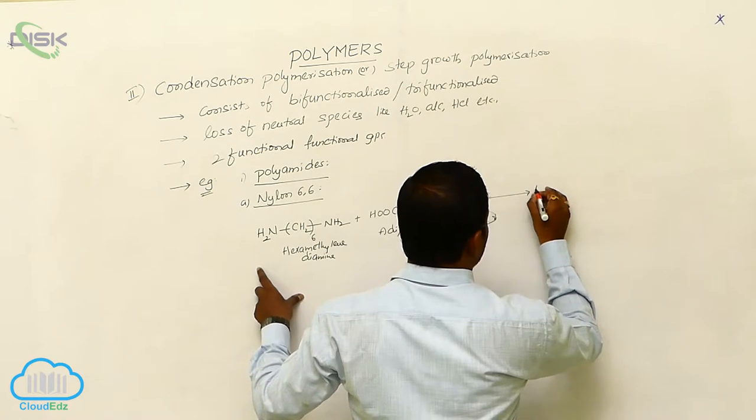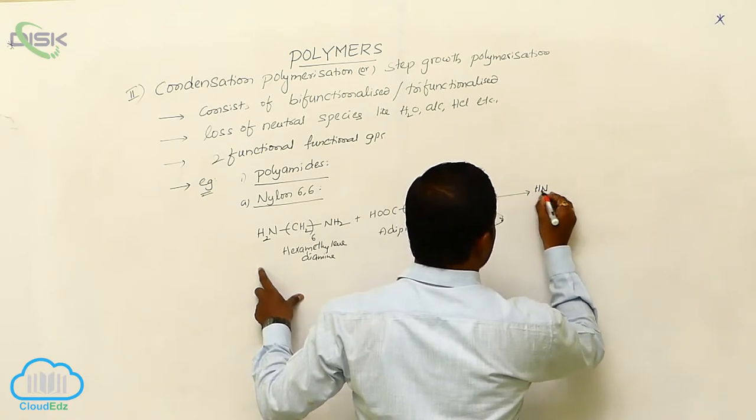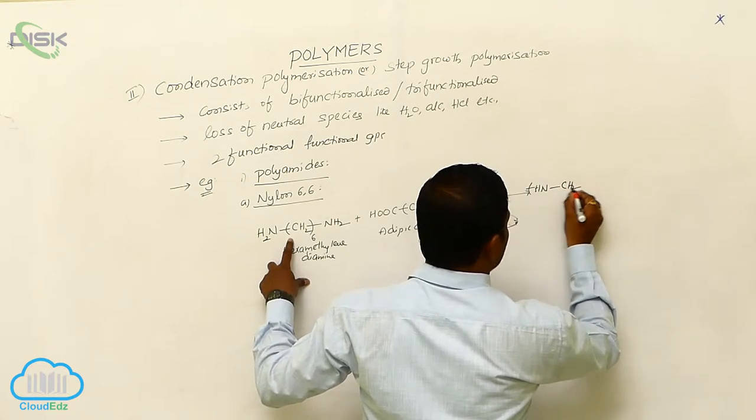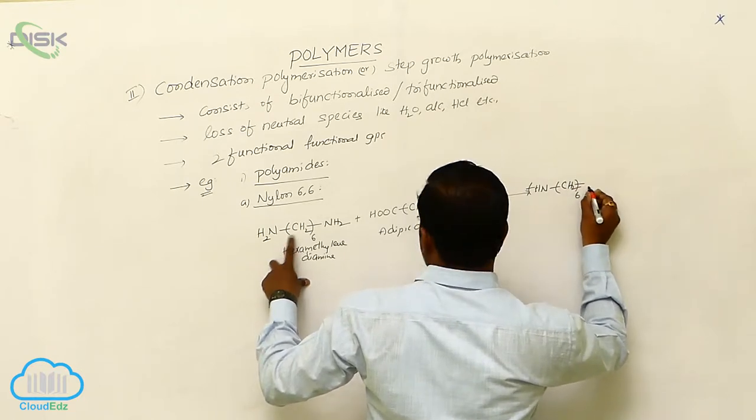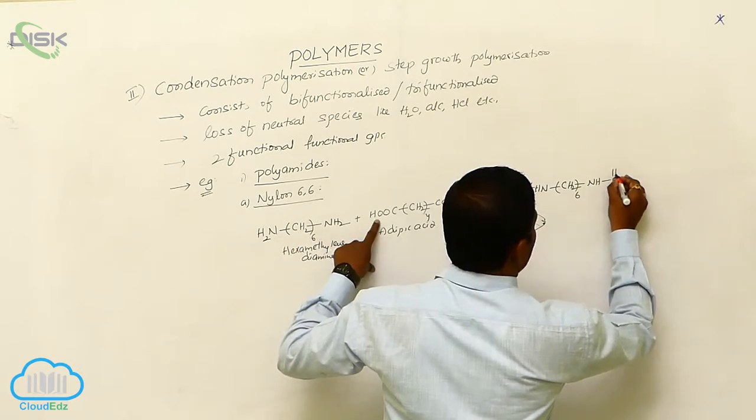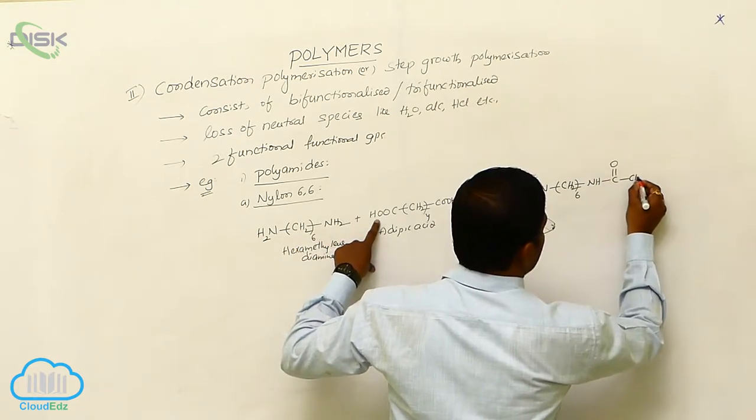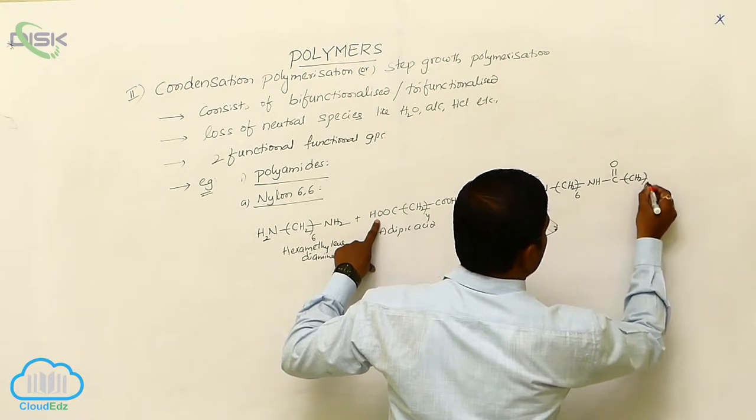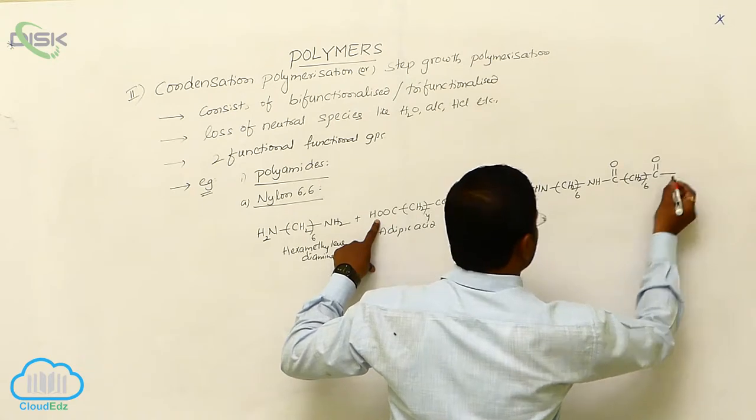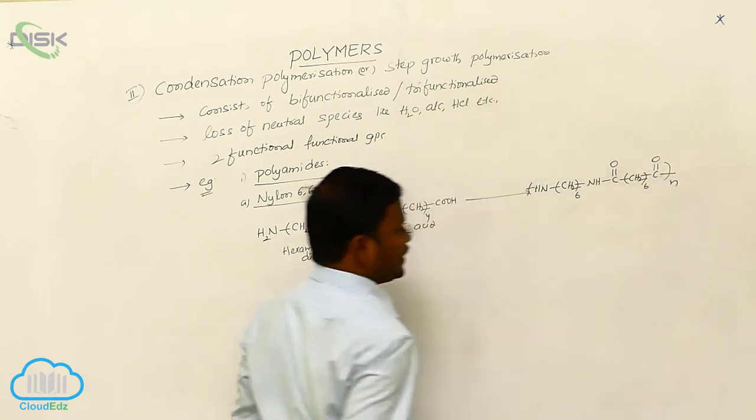The loss of water molecule is expected between these two and produces NH(CH2)6NH(CH2)4COOH, or we can write it as C=O. It continuously takes place.